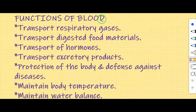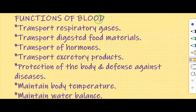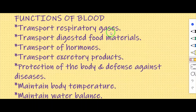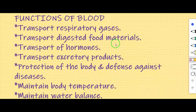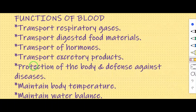Functions of blood. First, transport of respiratory gases — oxygen and carbon dioxide — to different parts of the body. Second, transport of digested food materials to different body cells. Third, transport of hormones. Fourth, transport of excretory products like ammonia, urea and uric acid. Fifth, protection of the body and defense against diseases. Sixth, maintain body temperature. Seventh, maintain water balance.